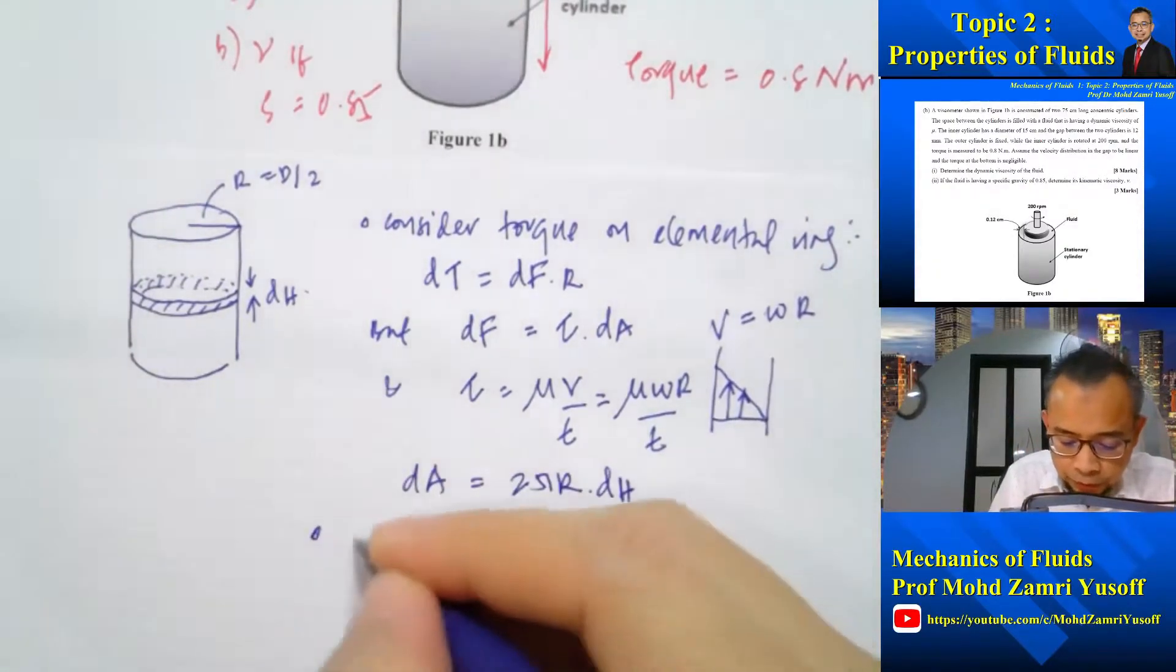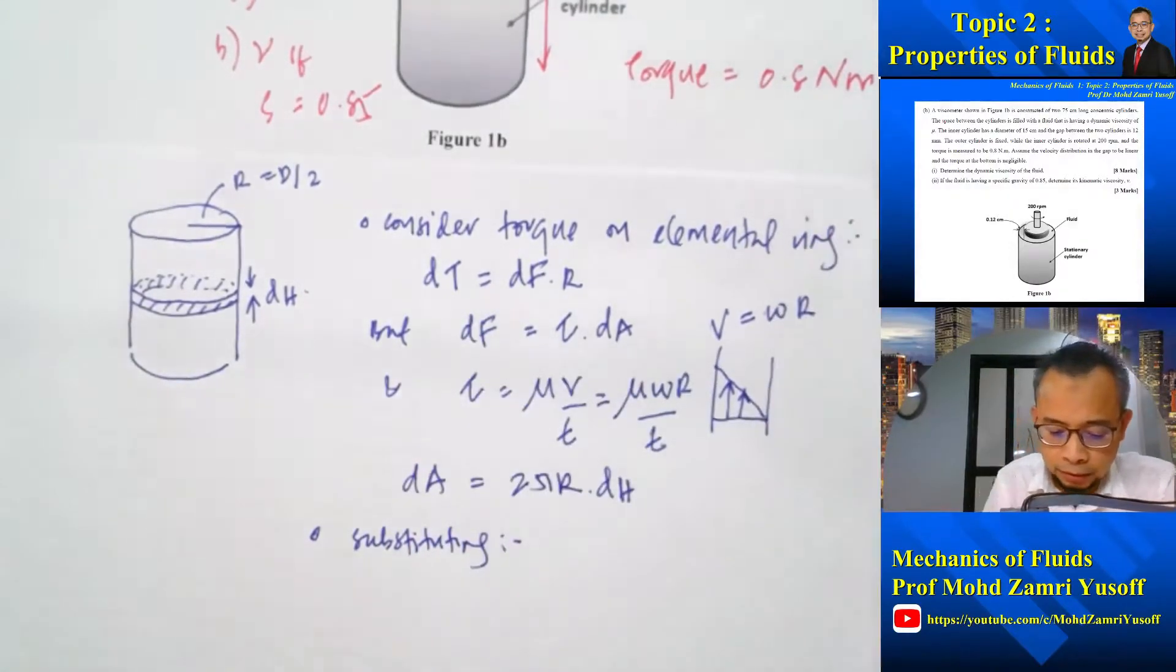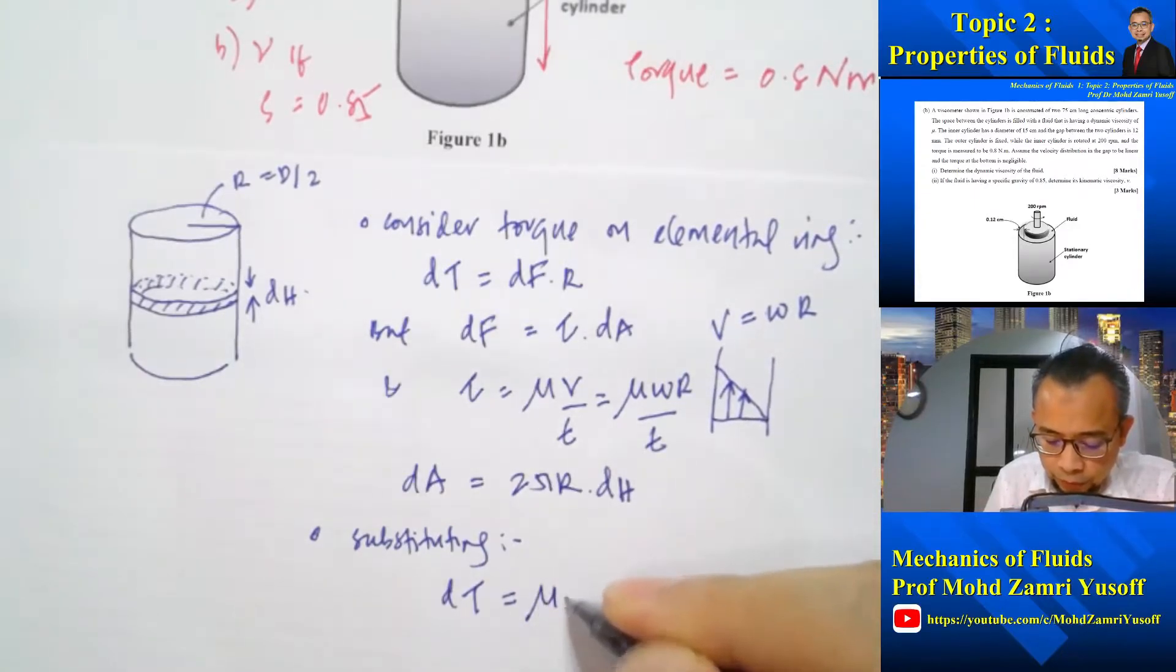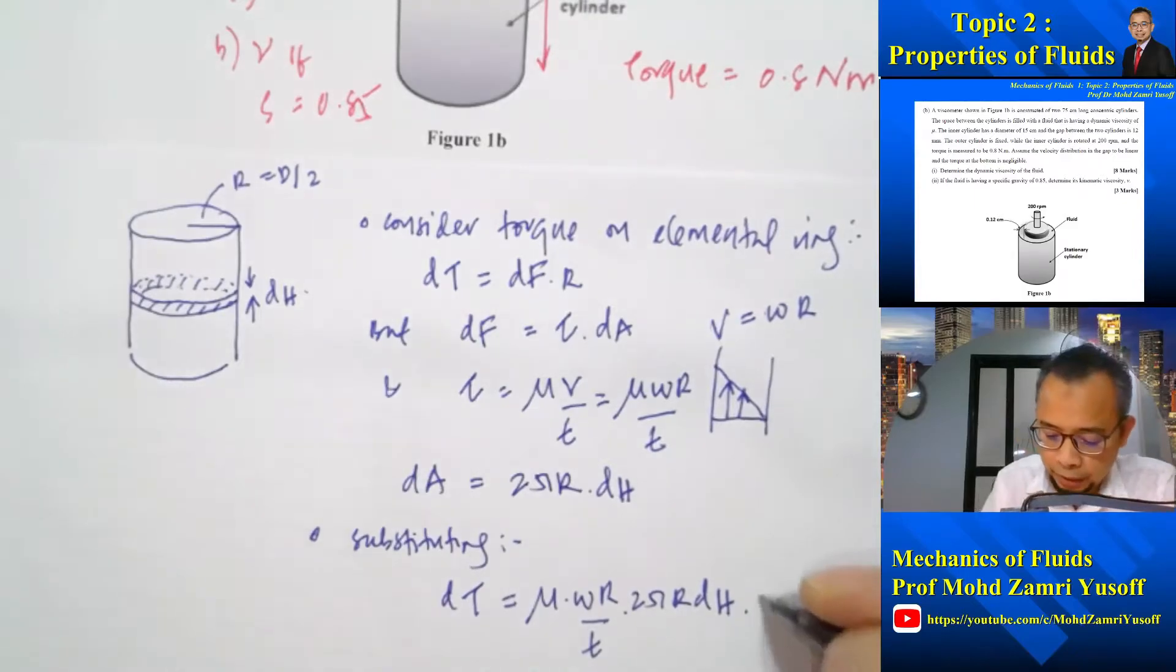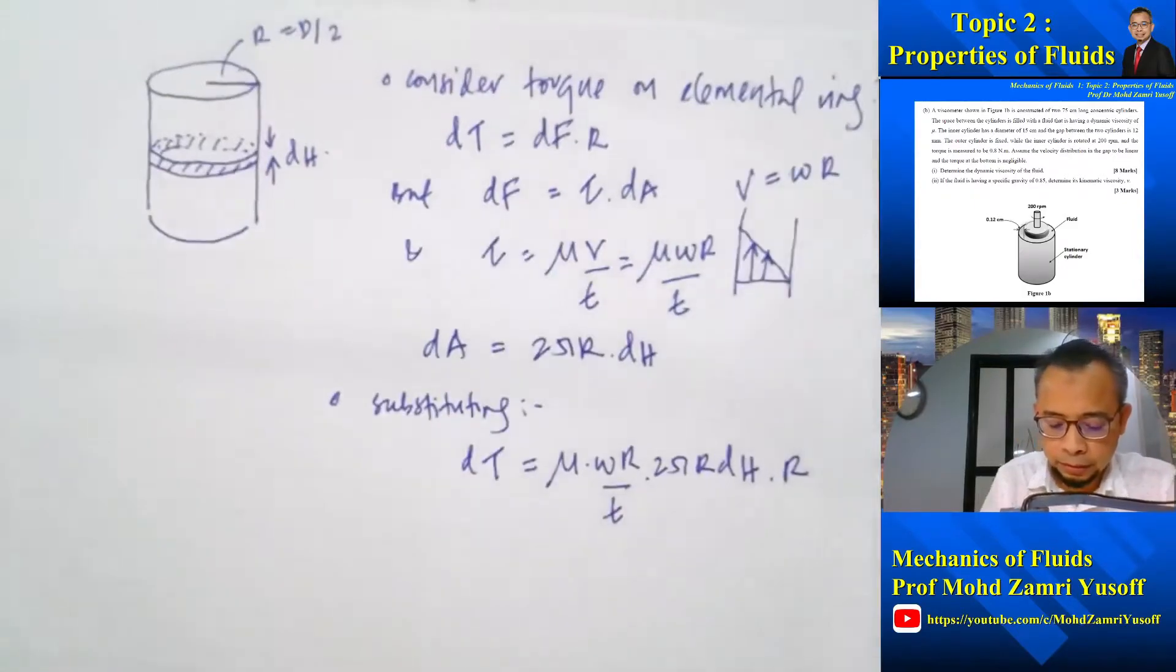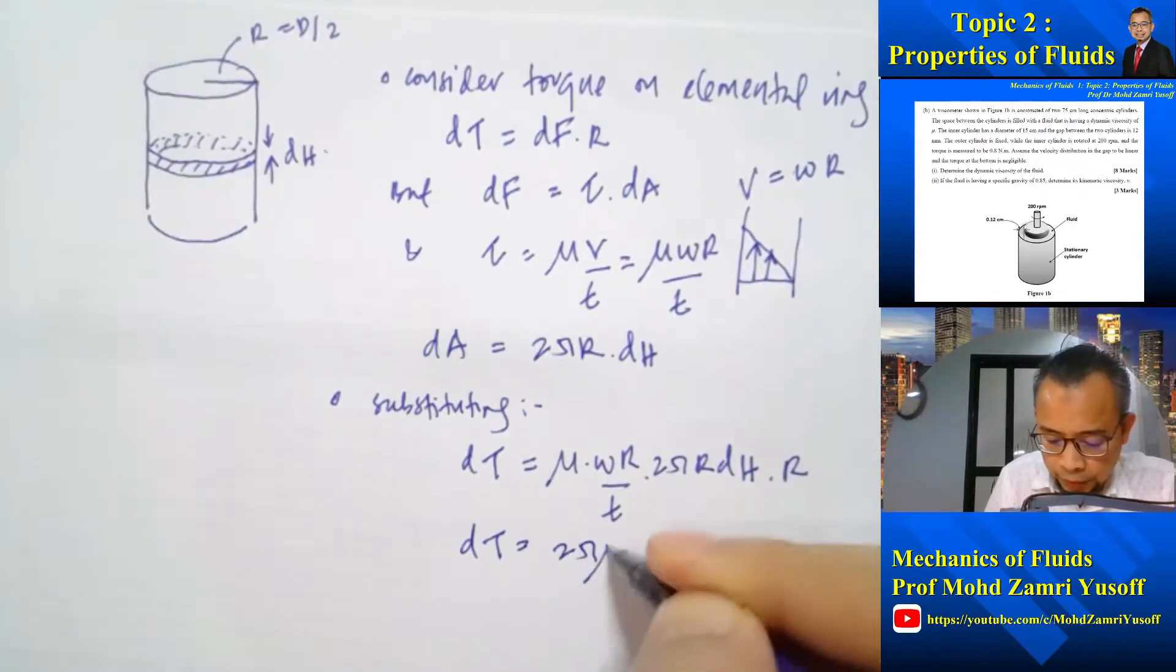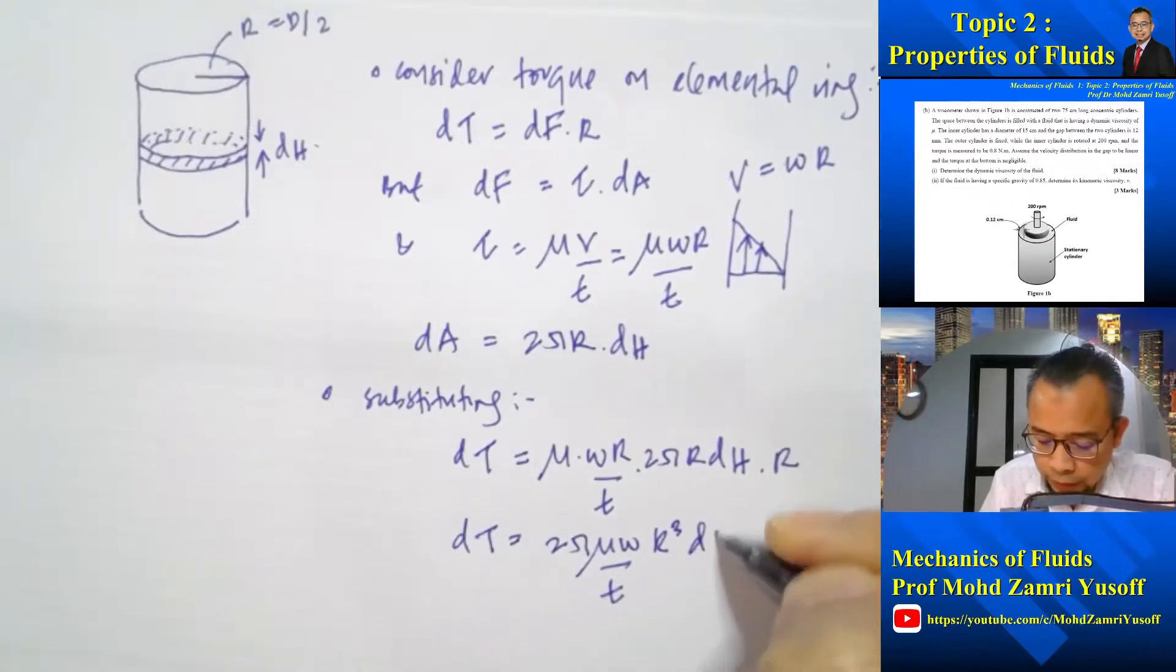So now if I substitute in order to get d-torque, I have d-torque equal to dF. dF is tau dA. The tau is mu omega r over t multiplied by dA which is 2 pi r dH, multiplied by r. So that gives me tau is 2 pi mu omega over d, r cubed dH.